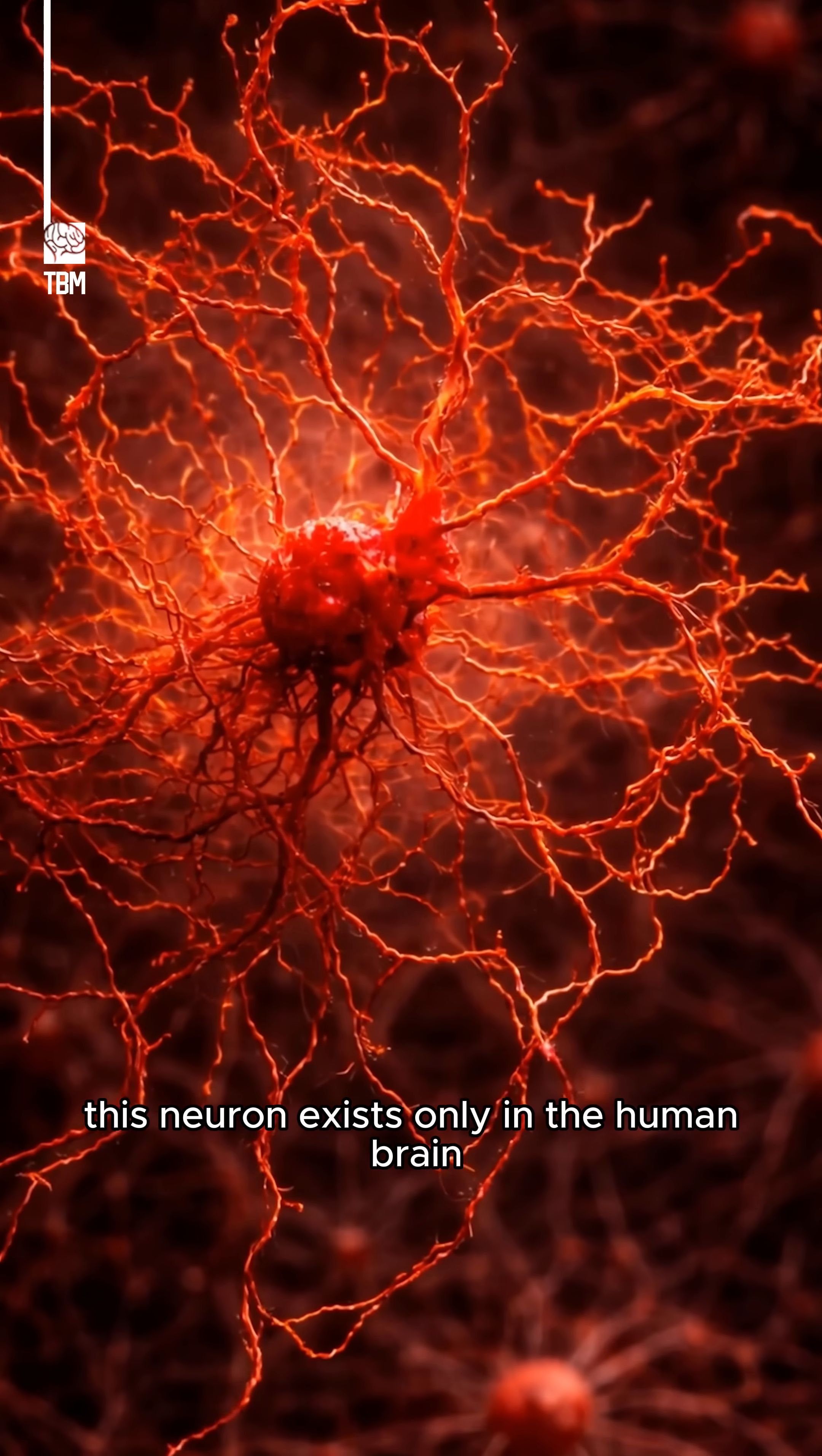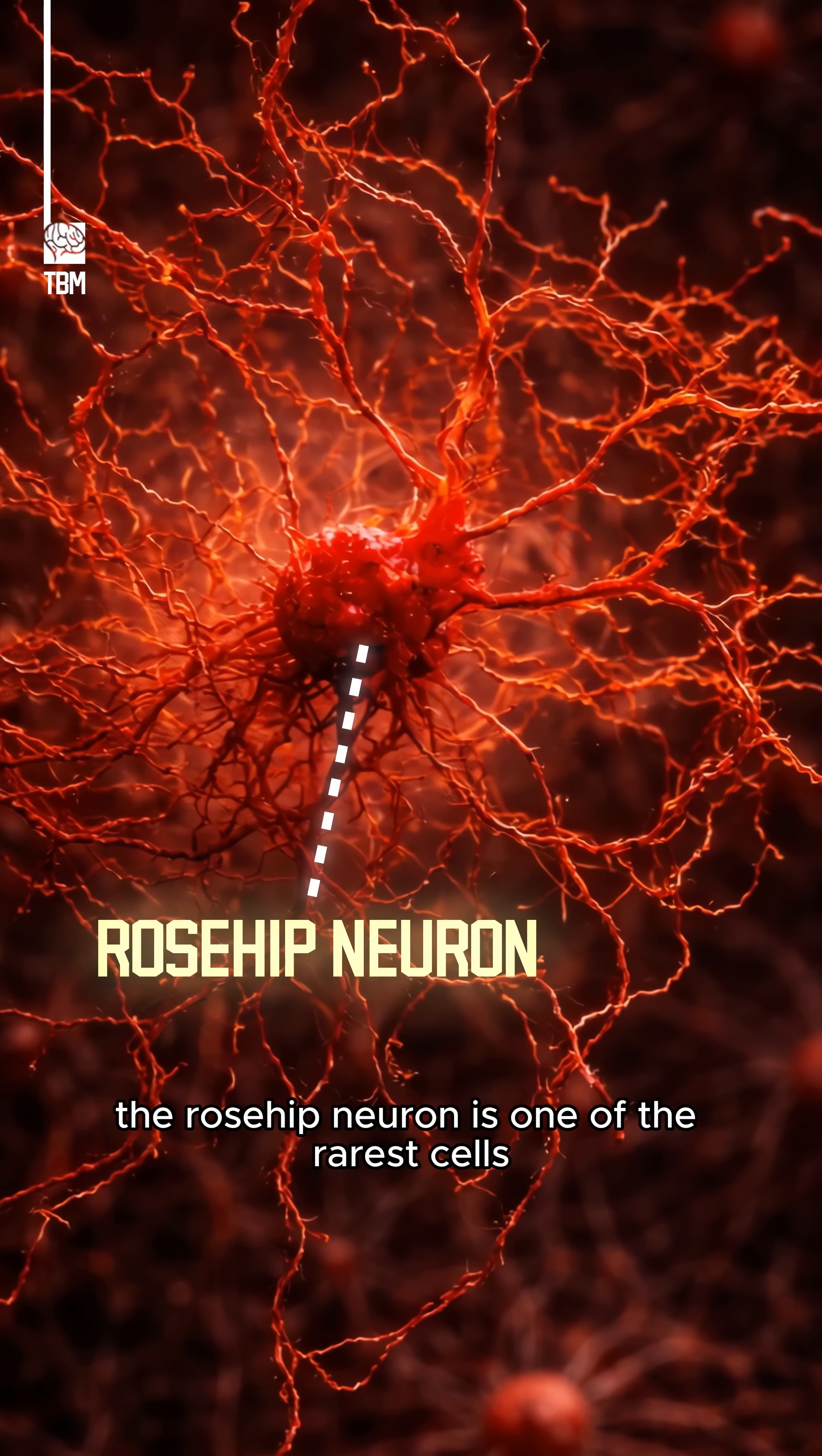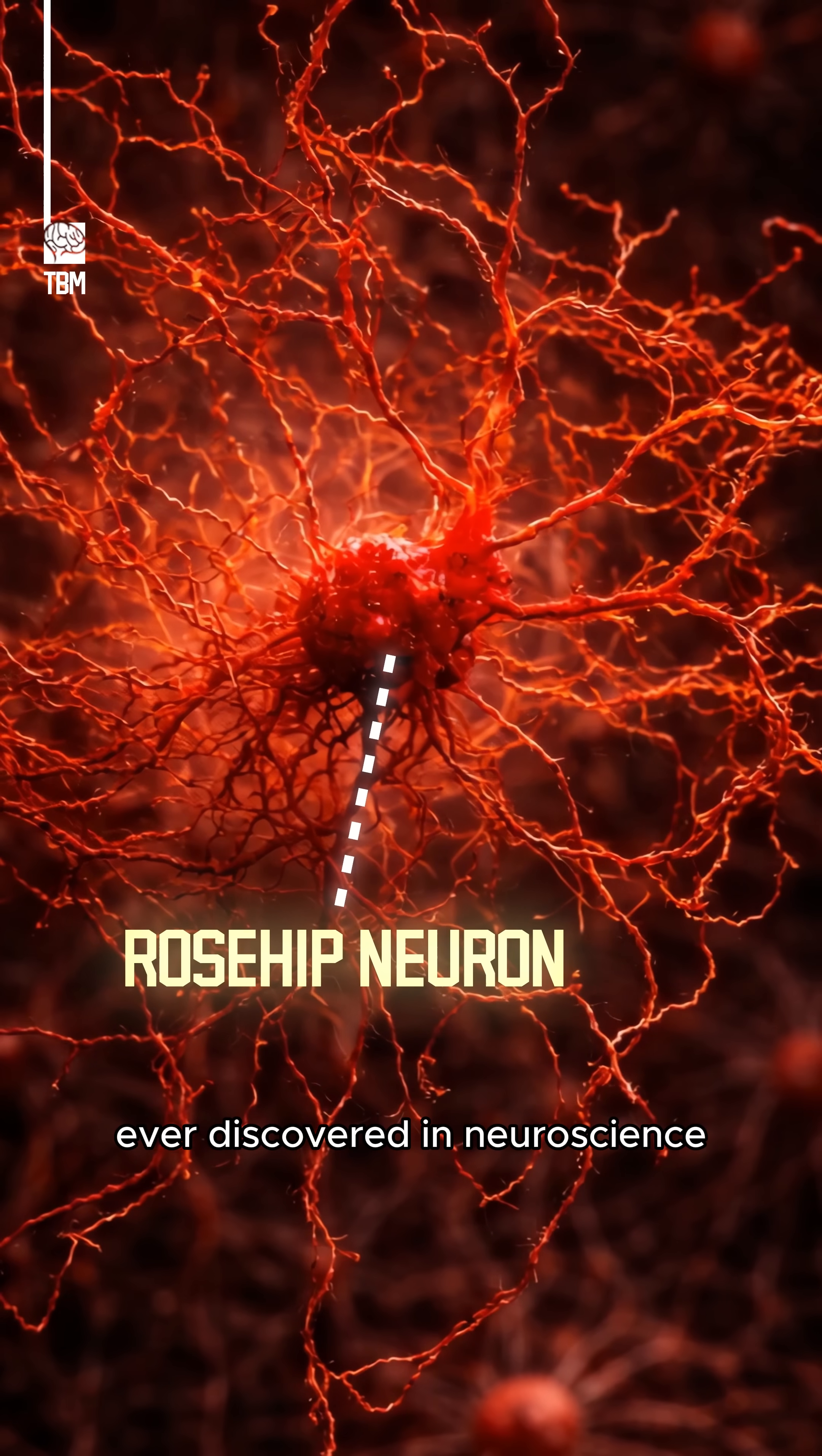This neuron exists only in the human brain. The rose-hip neuron is one of the rarest cells ever discovered in neuroscience.